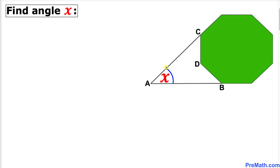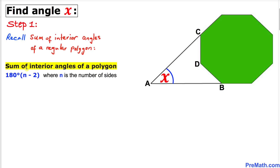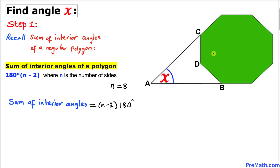Let's get started with the solution. First, let's recall the sum of the interior angles of a regular polygon. The formula is 180 degrees times (n minus 2), where n is the number of sides. Since we are dealing with an octagon, n equals 8. So the sum of interior angles is (8 minus 2) times 180 degrees, which gives us 6 times 180 degrees, equaling 1080 degrees.